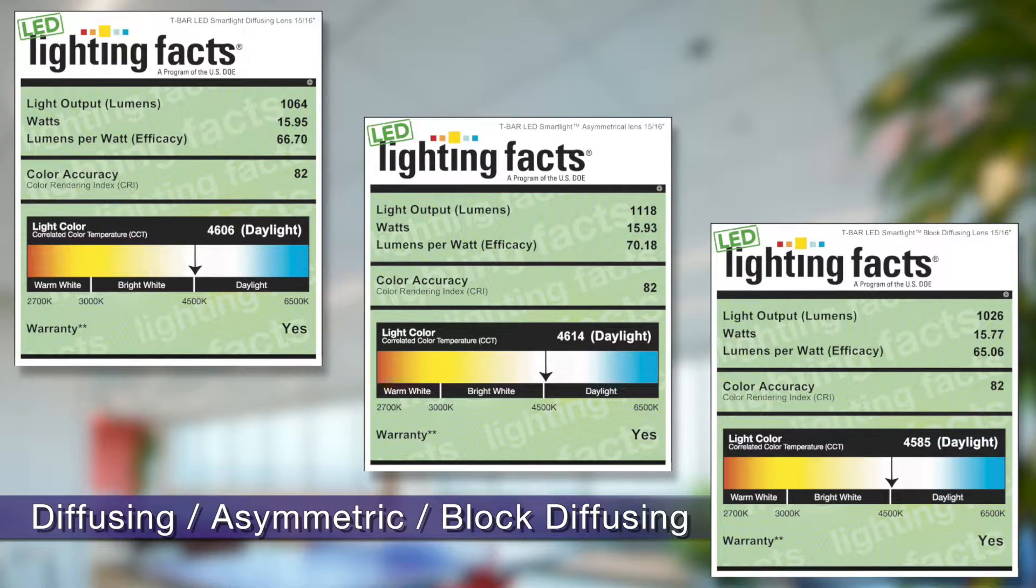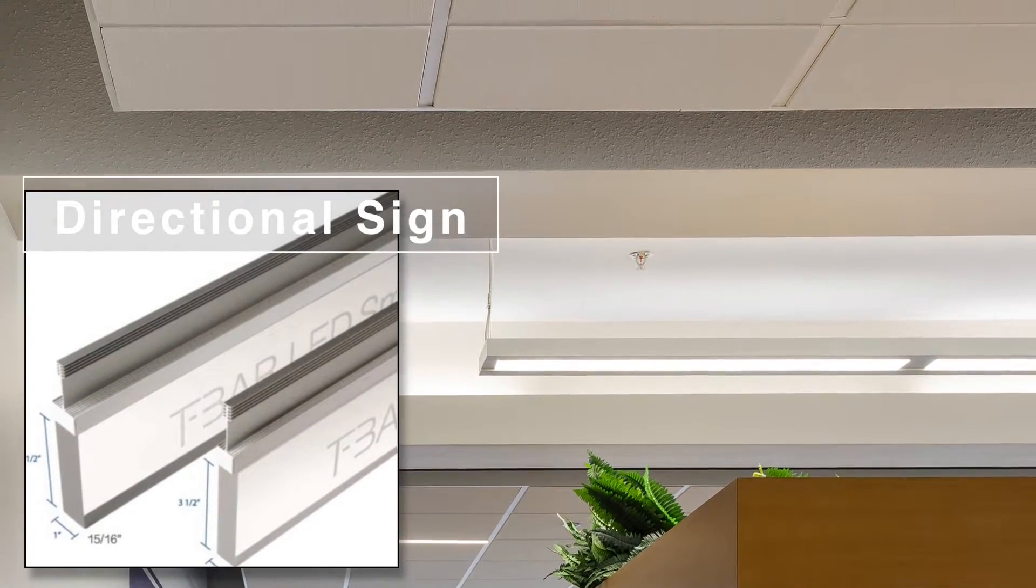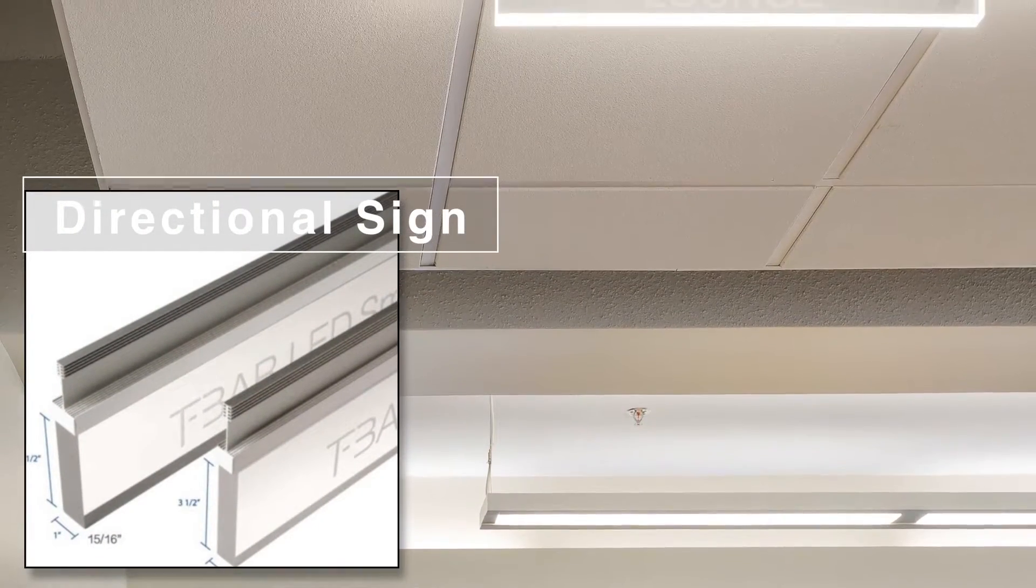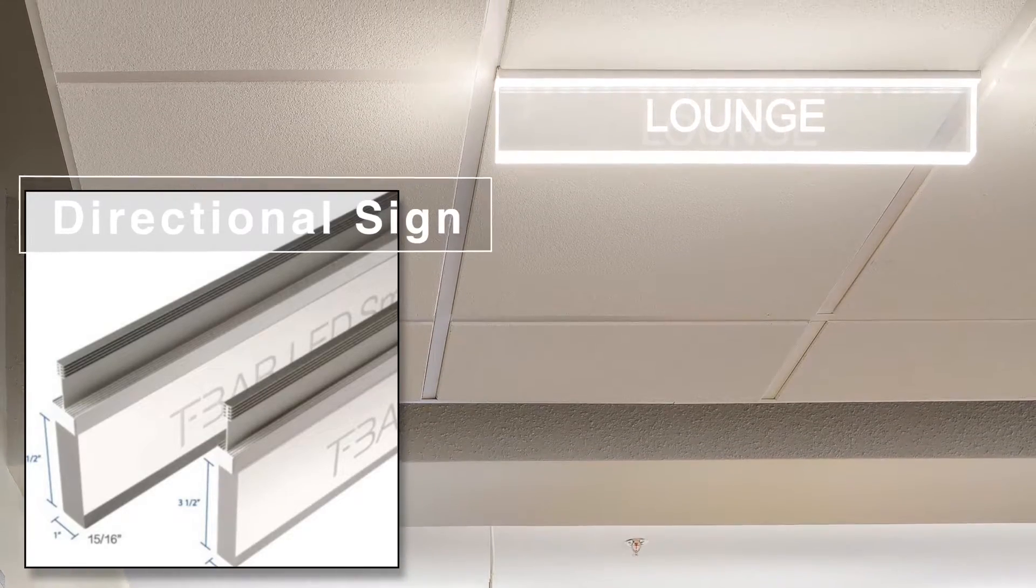Strategically placed T-Bar LED lights are the only lighting that you will need in your ceiling plane. The fact that these lights take up zero space means that you will have more room for an additional 10 to 20 percent of sound absorbing acoustical panels. T-Bar LED lights can also be equipped with directional signage that direct you where you need to go.